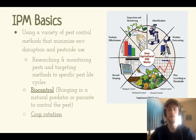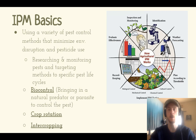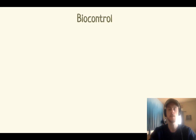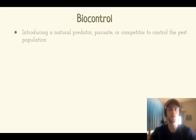You could use methods like crop rotation, which involves planting different crops in different seasons to disrupt the pest's natural food source. Biocontrol is short for biological control, and that involves adding a natural predator, a natural competitor, or a natural parasite to control your pest population.